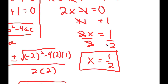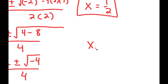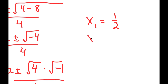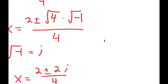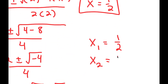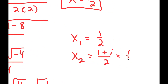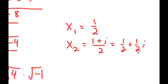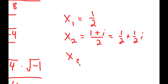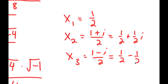So I have three solutions to this equation. My first solution is 1 half. My second solution is 1 plus i over 2, which is also equal to 1 half plus 1 half i. And my third solution is 1 minus i over 2, which equals 1 half minus 1 half i.